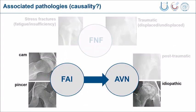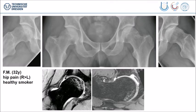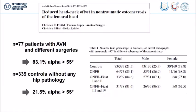Let's turn to the association between impingement and avascular necrosis. I'm sure several of you have cases like this. This is a young man, 32 years of age, with a clear cam deformity and a clear, typical necrosis pattern. He has pain and is currently deciding whether to follow the advice of a combination of core decompression and correction of the deformity.